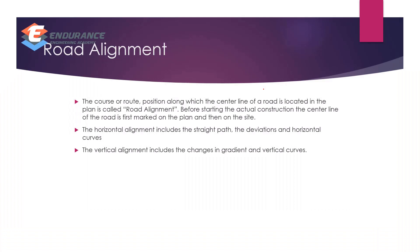First, let's see road alignment. Road alignment is the course or route position along which the centerline of a road is located in the plan. It is called road alignment. Before starting the actual construction, the centerline of the road is first marked on the plan and then on the site. If you want to start the road, we want to mark the centerline of the road on the site.